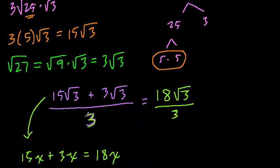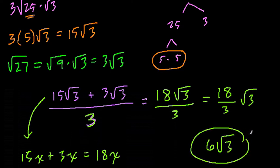From right here, this 3. So now we have 18 times root 3 divided by 3. We can think of that as 18 over 3, radical 3, which is equal to 6 radical 3. And that's my answer. Thanks.